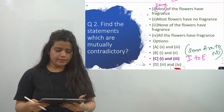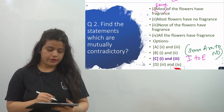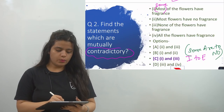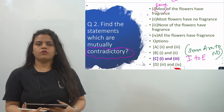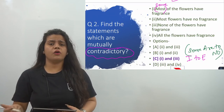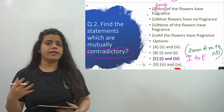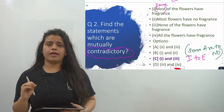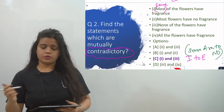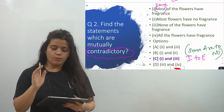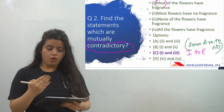Now the second question is: find the statements which are mutually contradictory. You need to understand what contradictory means and the universal laws of opposition. When we study syllogism, four laws come up: contrary, contradictory, subcontrary, and subaltern. The options given are: most of the flowers have fragrance, most flowers have no fragrance, none of the flowers have fragrance, all the flowers have fragrance. It is important to know that 'most' is treated as 'some' — always remember that most means some.